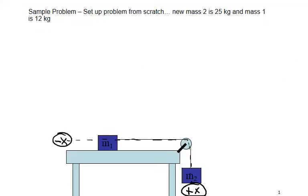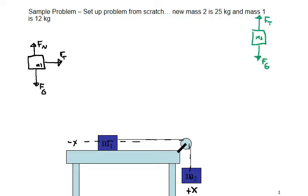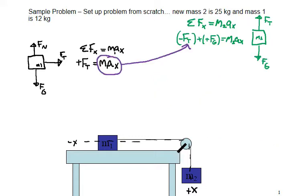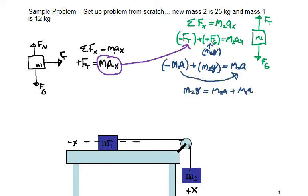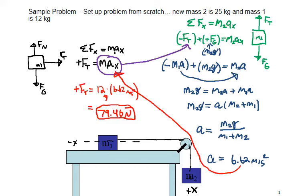Let's see how you did. We have our positive x and negative x, free body diagram with normal force, force of gravity, and tension for mass one, and tension and force of gravity for mass two. Positive force of tension equals m1 times a in the x, and negative force of tension plus positive force of gravity equals m2 times a in the x. Substituting m1 times a for tension, we get negative m1a plus m2g equals m2a. Solving: acceleration equals m2g over (m1 plus m2), giving 6.62 meters per second squared, and tension equals 79.46 Newtons.